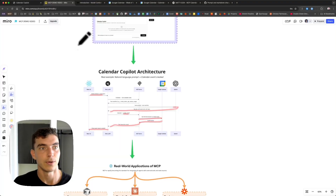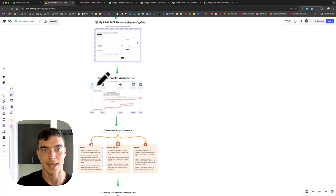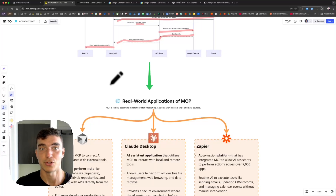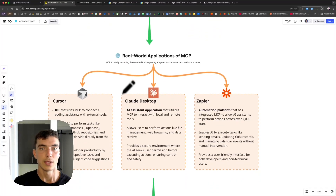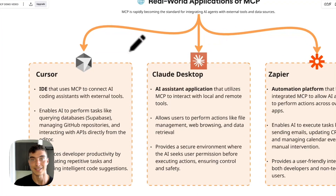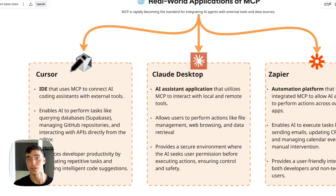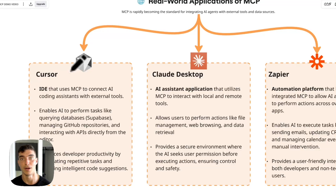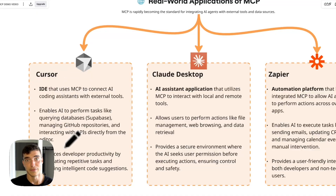You can imagine how this simple Calendar Copilot example could be expanded to more real-world applications, which is already happening. Cursor, the IDE many people use for AI coding, uses an MCP to connect their AI coding assistants with external tools. A lot of people use Supabase — you can actually talk to your codebase when creating data tables. It can use your live Supabase table schemas so it knows what type of requests to send and what type of data to expect. This overall enhances developer productivity and allows you to use live data as opposed to just what the model knows.